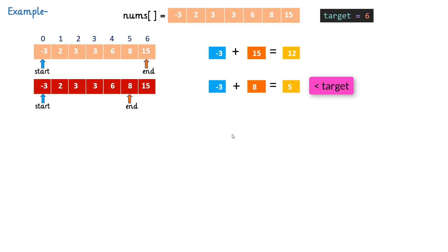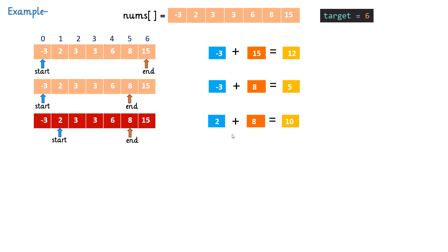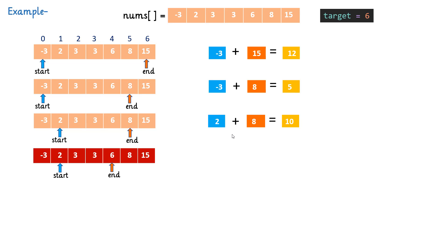Now the sum 5 is less than 6, so we want to increase the sum. Moving left to right is increasing order, so we increment the start pointer towards the right. The start pointer moves to the next element. The sum of 2 plus 8 is 10, which is greater than 6. So again, if the sum is greater, we move the end pointer towards the left.